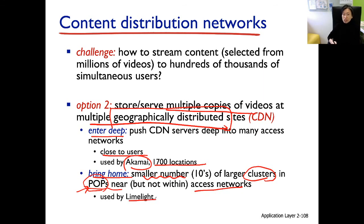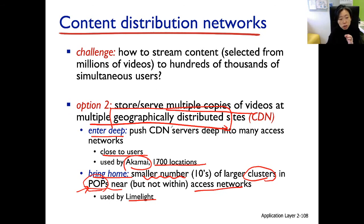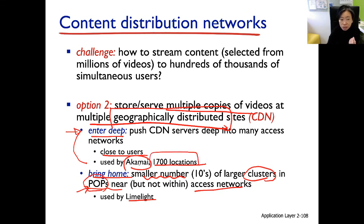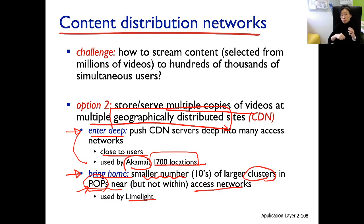Limelight offers a bring-home CDN service. You can see some advantages and disadvantages of the two models. The enter-deep model is closer to the end customer, so some large, wealthy service providers might subscribe to it, though maintaining that infrastructure is very high cost. Smaller content providers that are not quite as wealthy might instead subscribe to a bring-home CDN service.